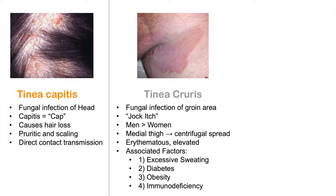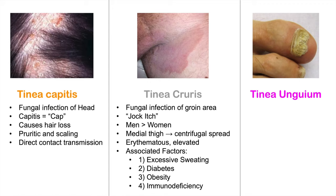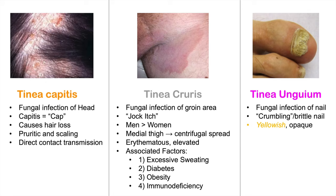The last presentation is tinea unguium, a fungal infection of the nail, also called onychomycosis. There is an entire separate lecture on this topic if you want more information. It presents as a crumbling, brittle nail because the fungi are digesting the nail itself, leading to a yellowish opaque nail. If you look underneath the nail, you get subungual hyperkeratotic debris.